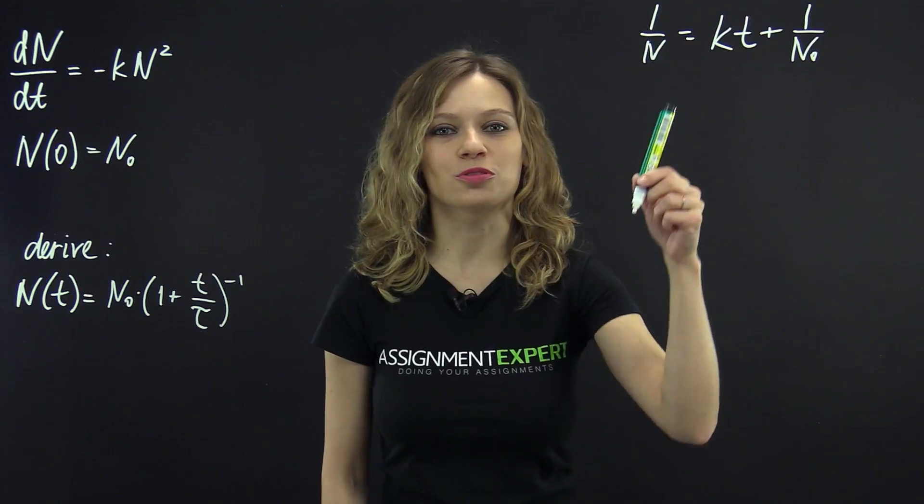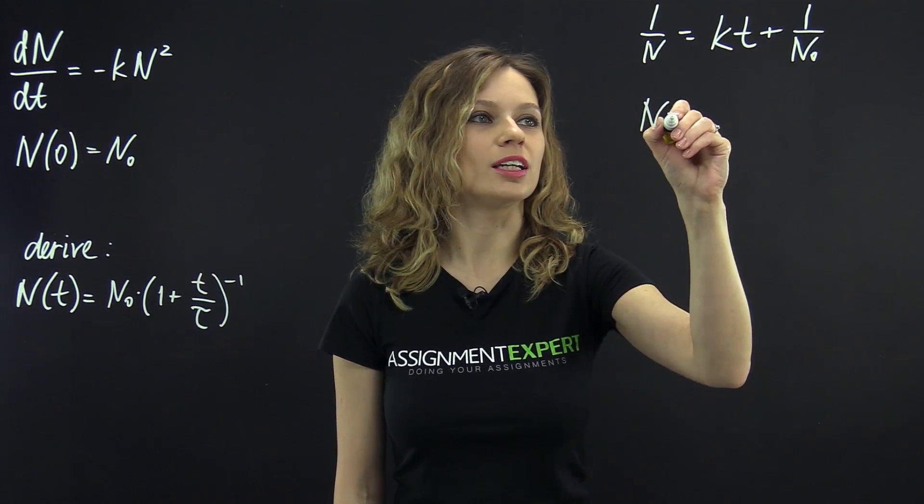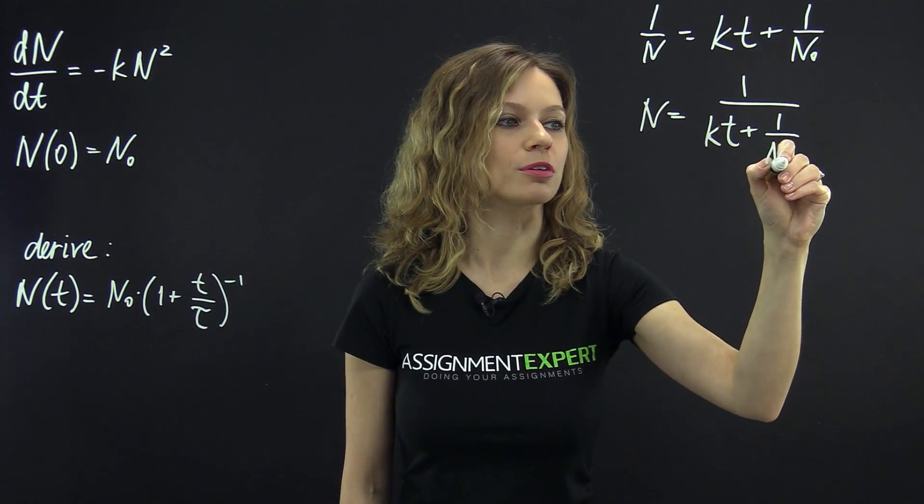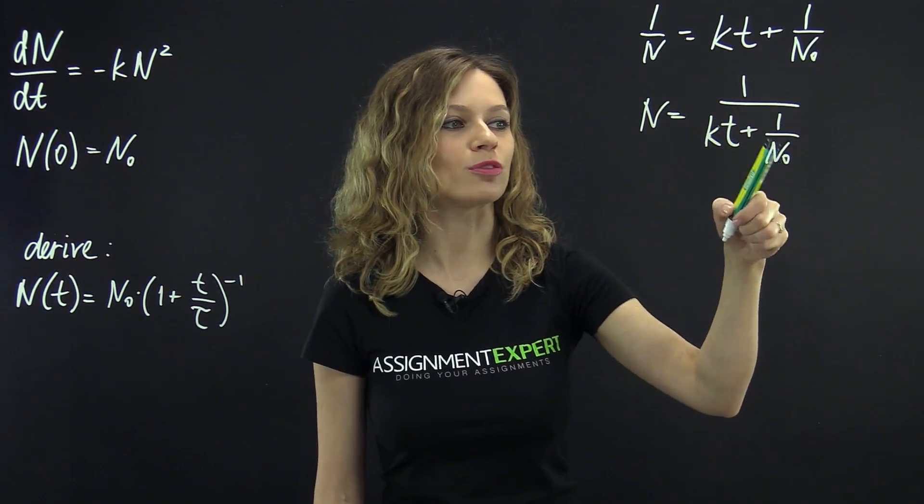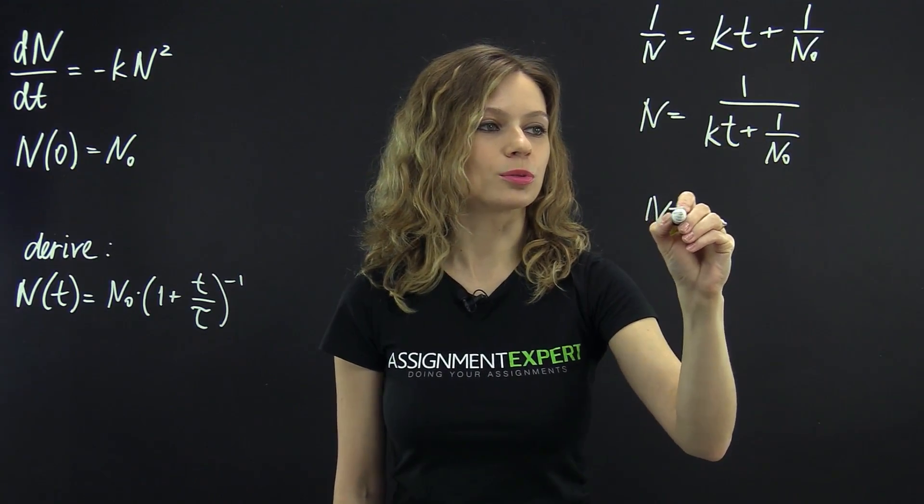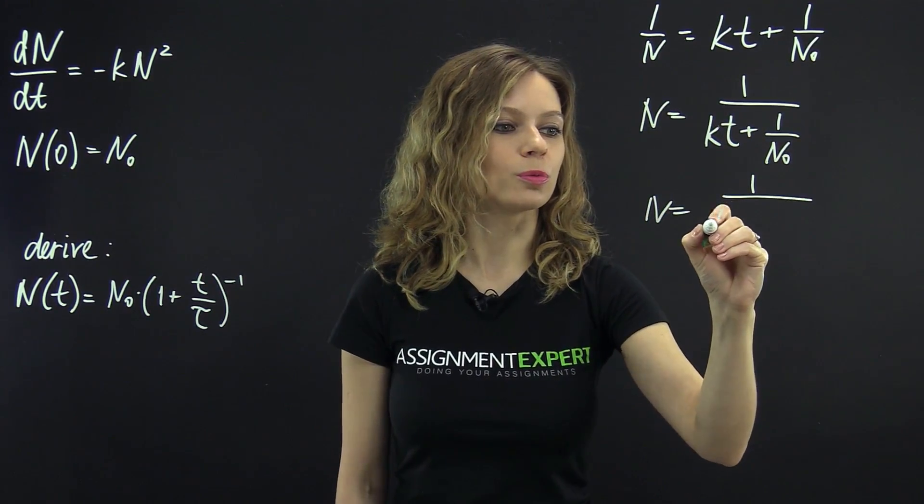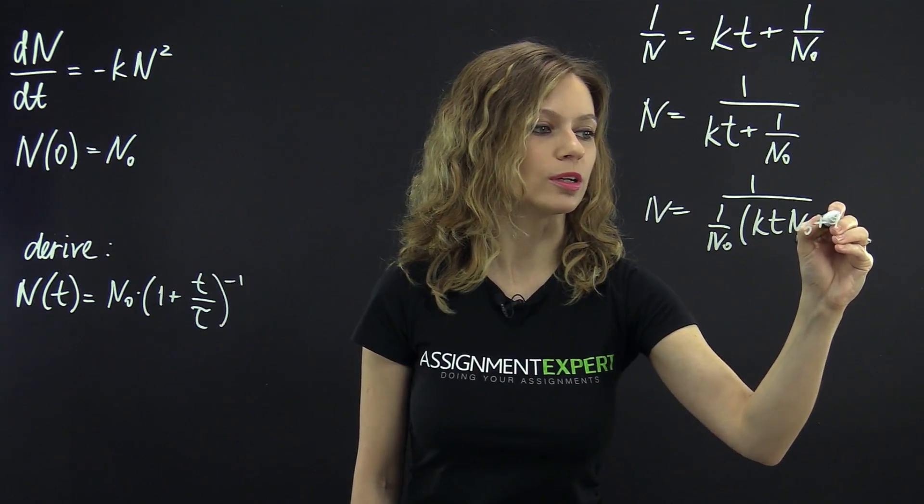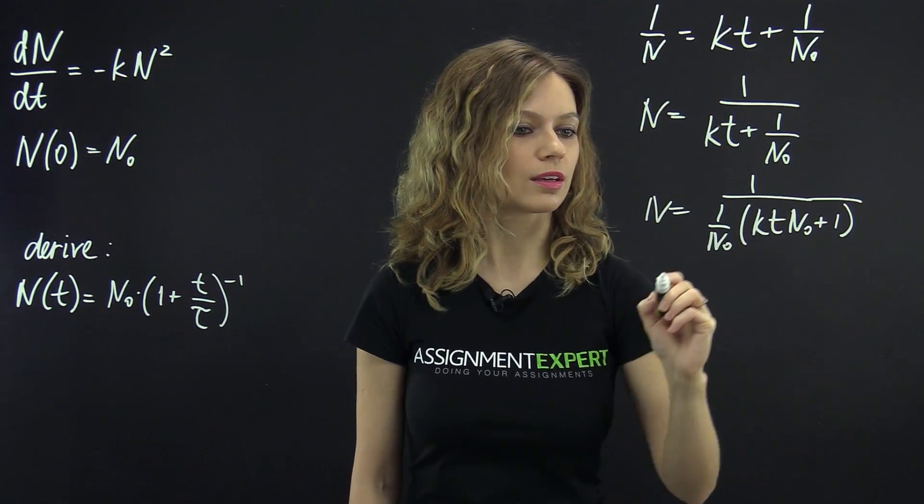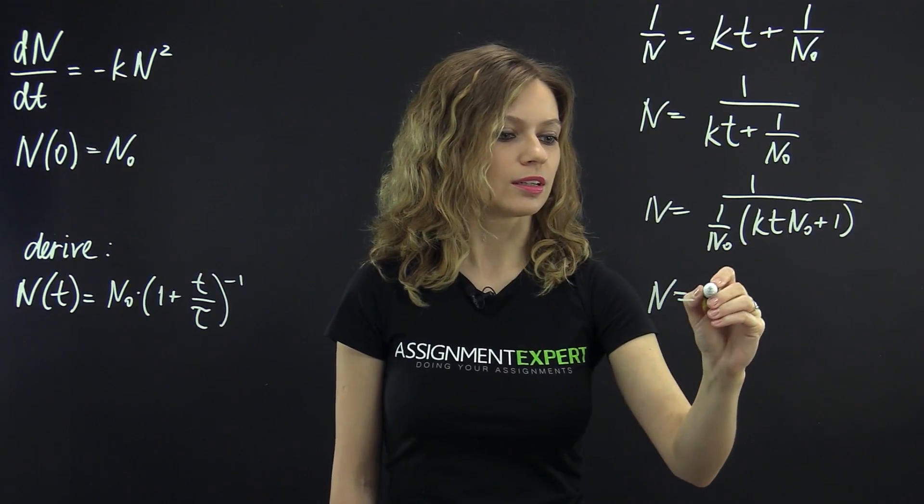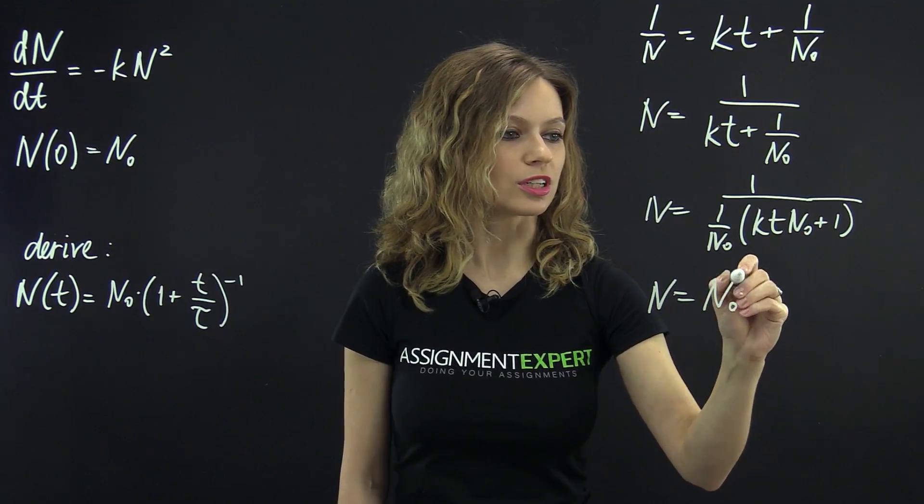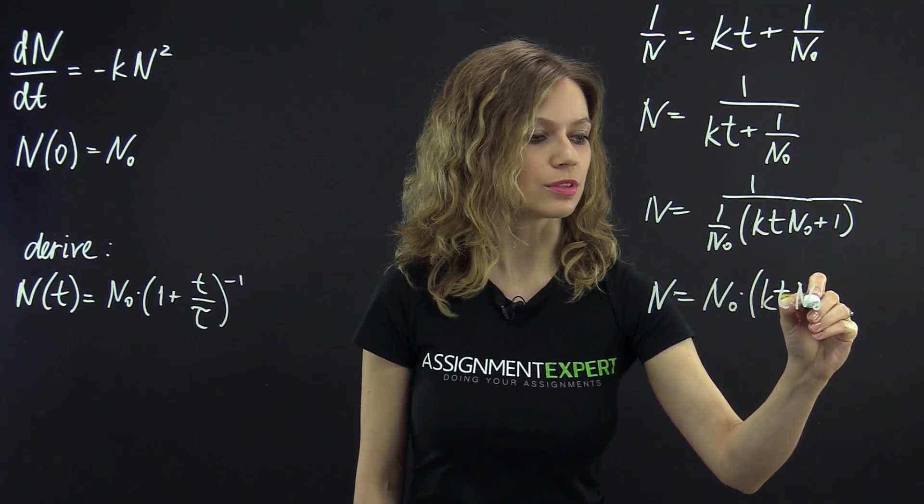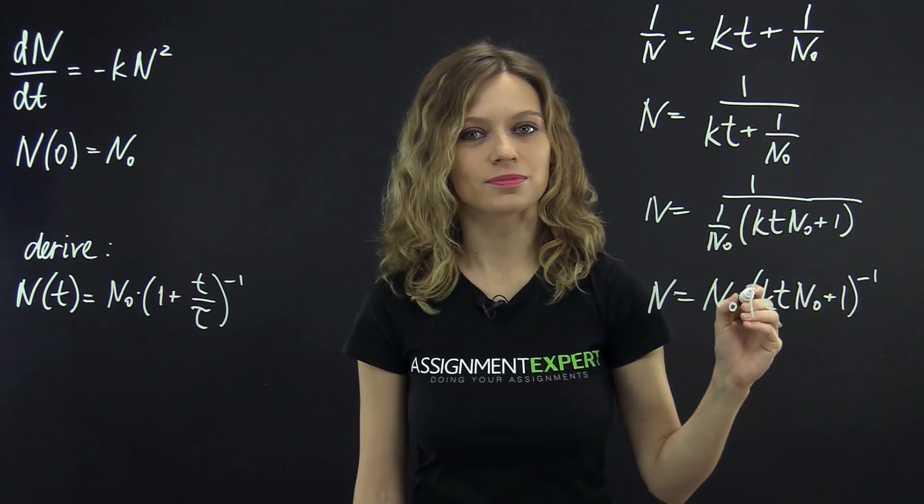Now, let's solve this equation for N. So, we have N equals 1 over kt plus 1 over N sub 0. We can factor out 1 over N sub 0 and we'll have N equals N sub 0 times kt times N sub 0 plus 1 to the power of negative 1.